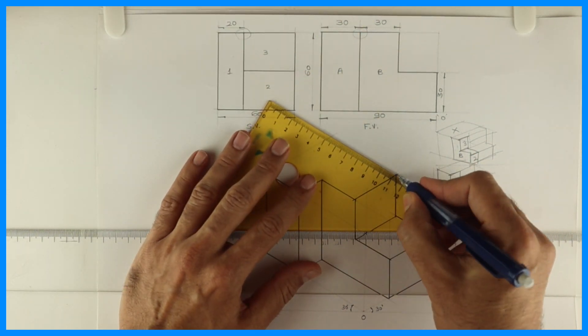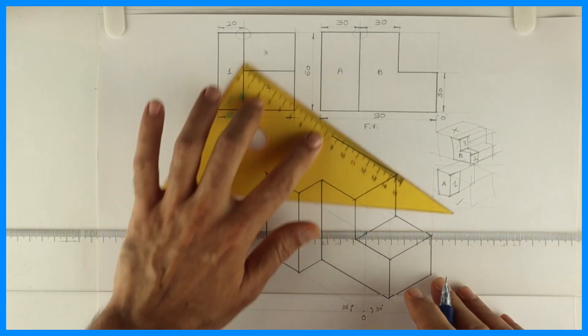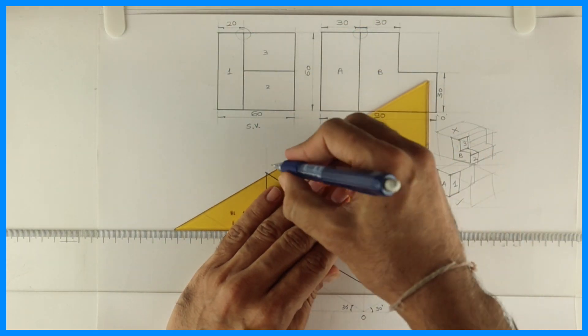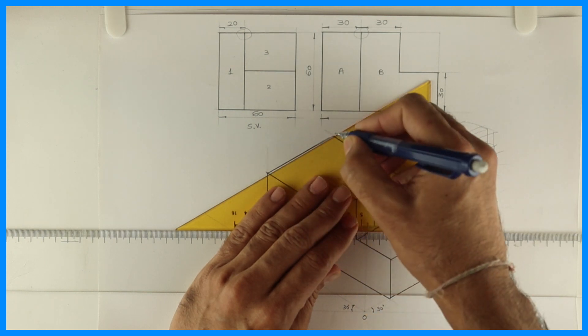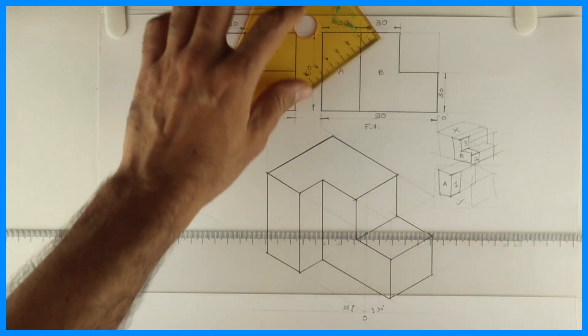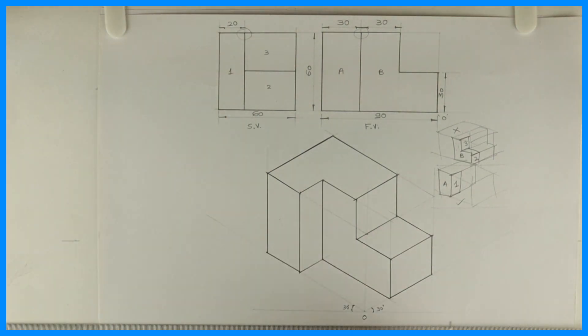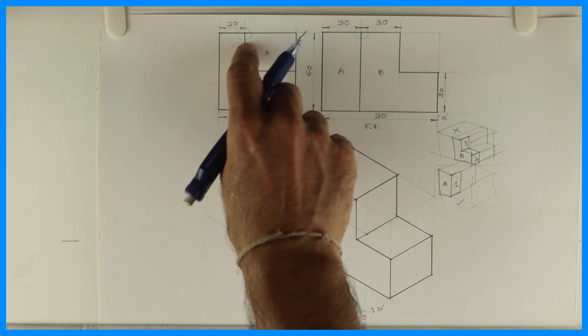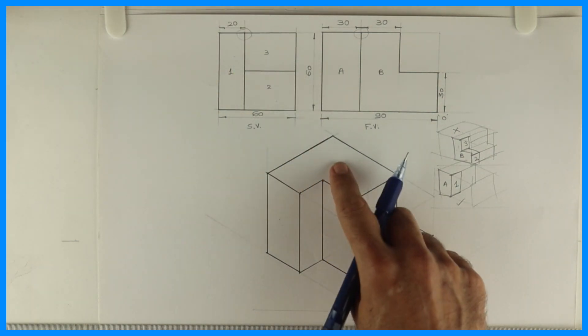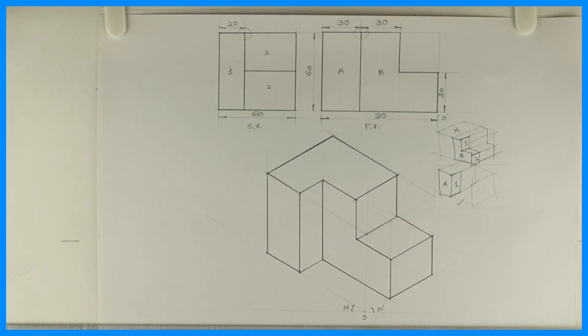So this way we have completed this sum. You can darken this. Now if you see this T part, see over here. So we are done with this sum.